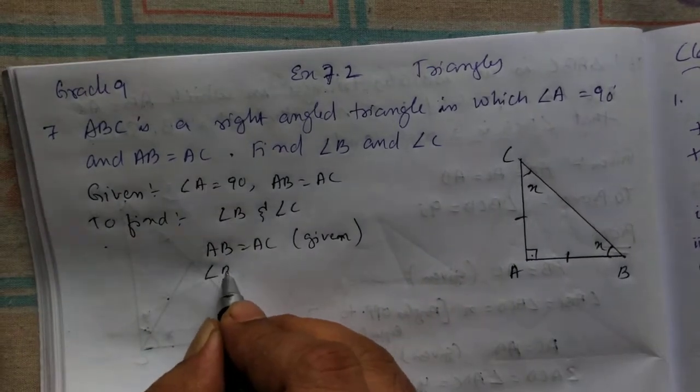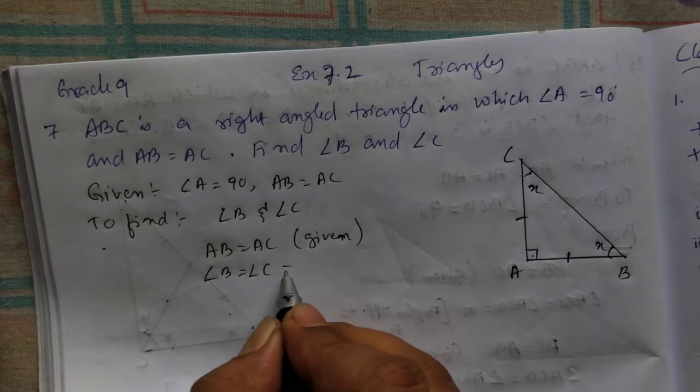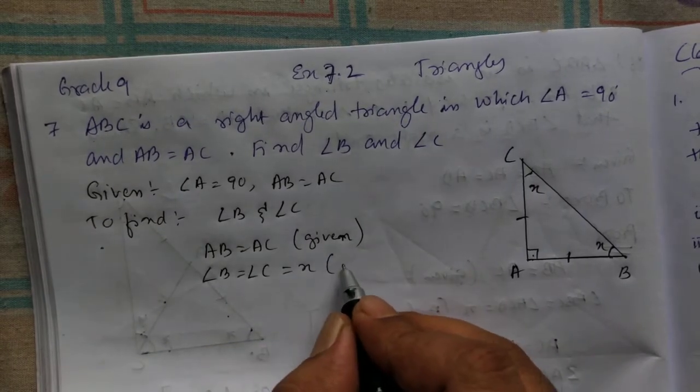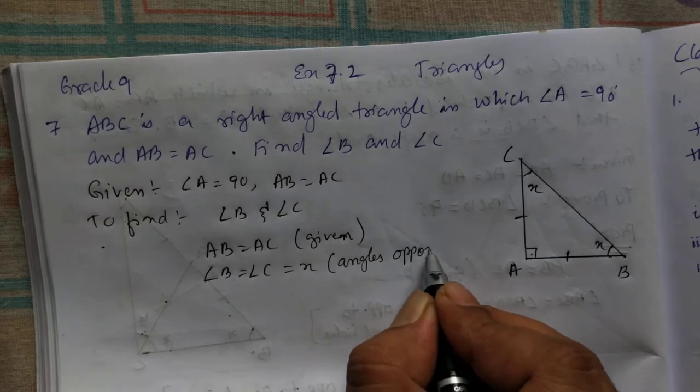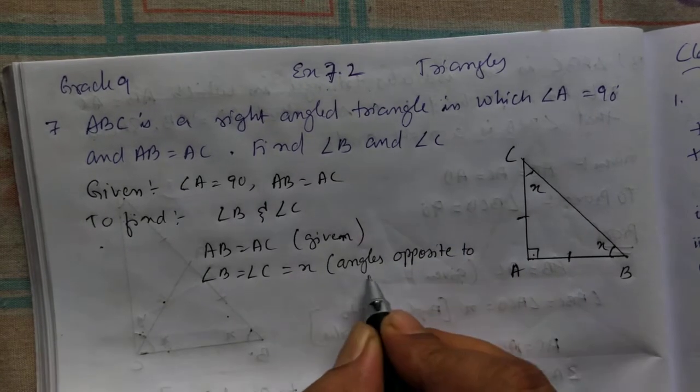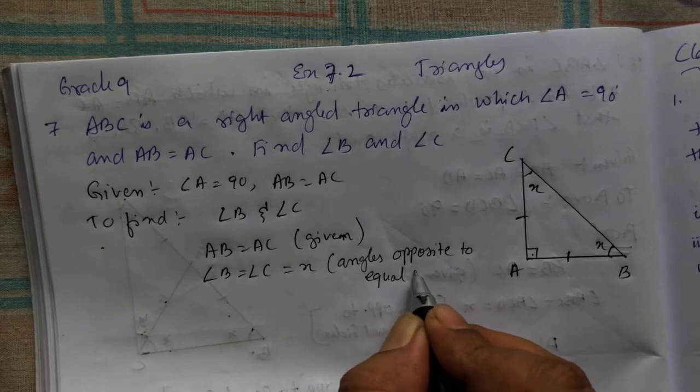That means angle B will be equal to angle C and we're taking it X. Reason is: angles opposite to equal sides.